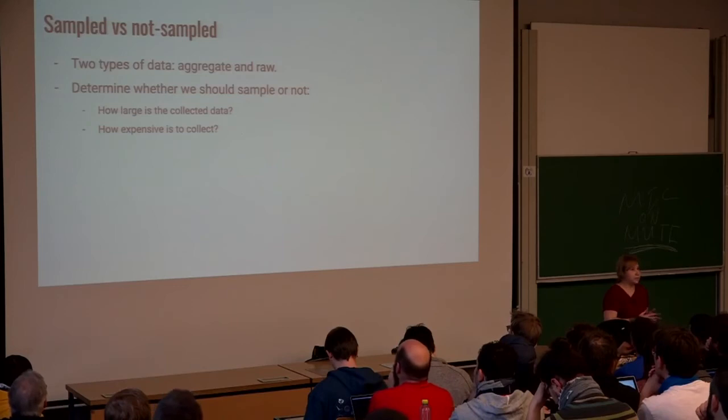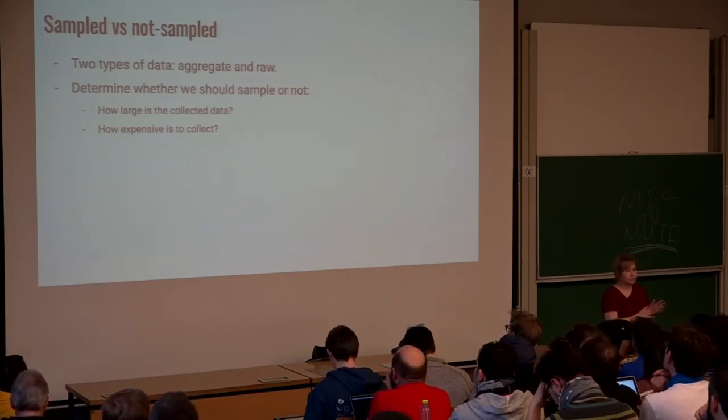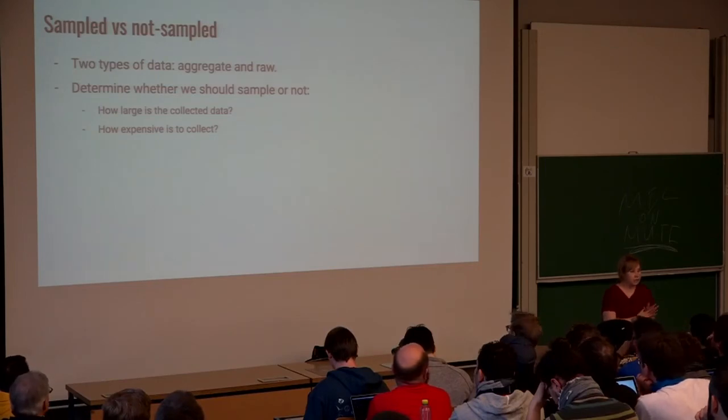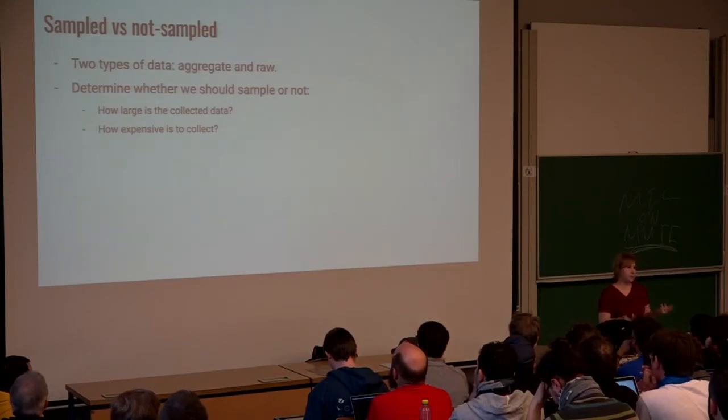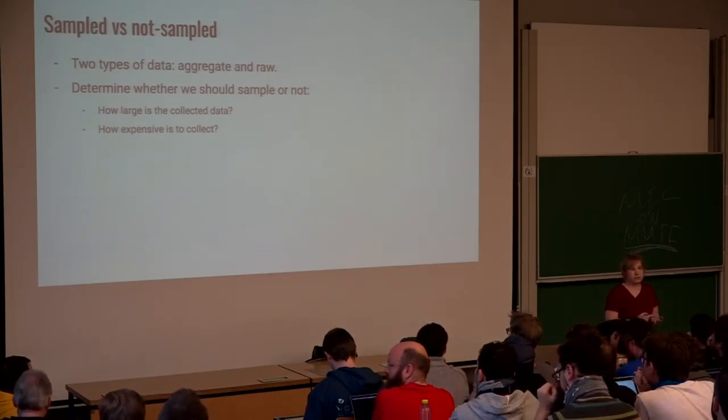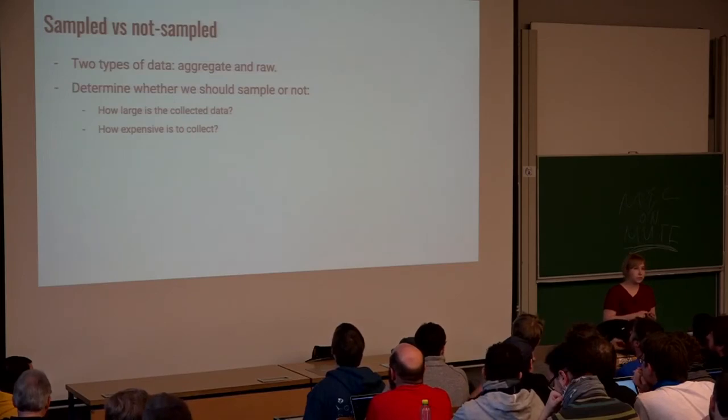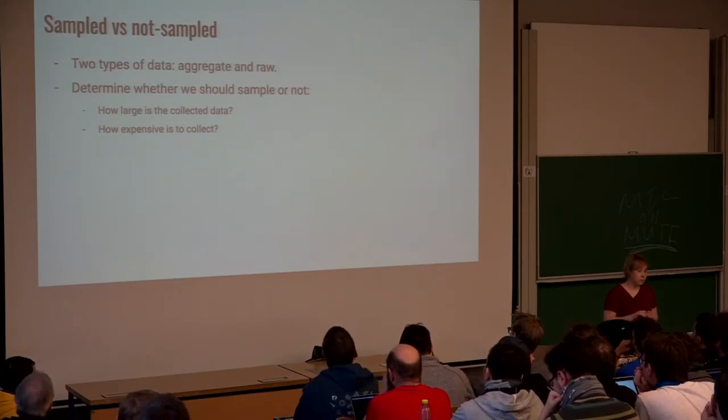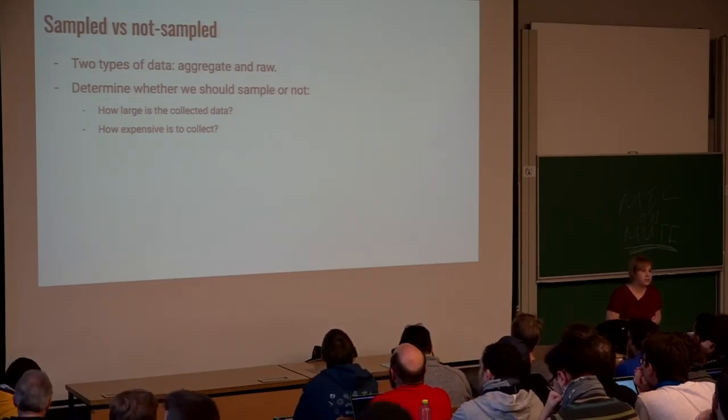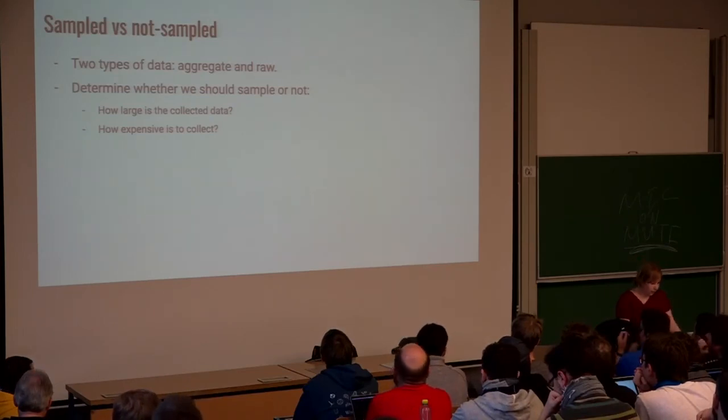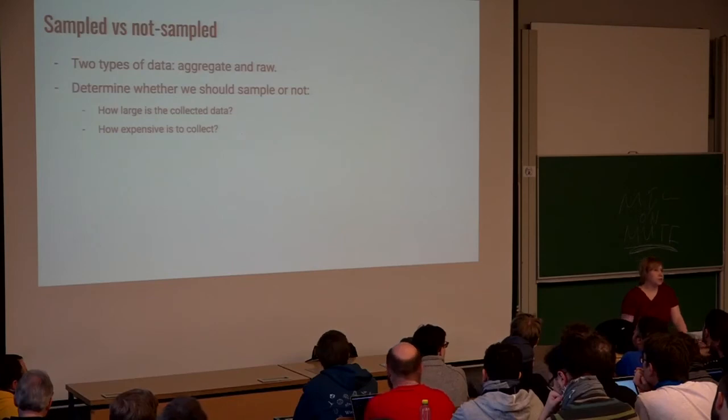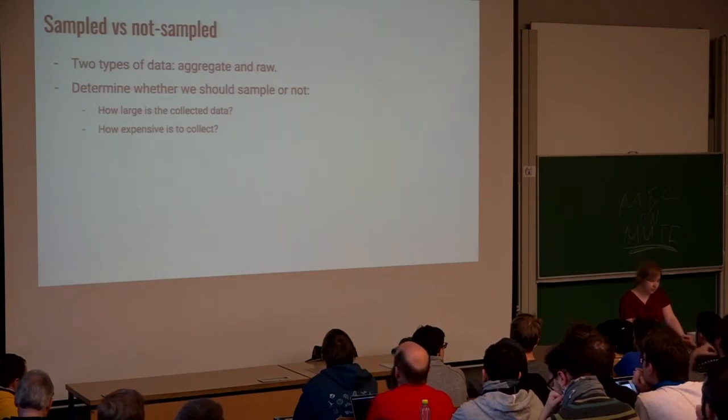We sample expensive and large data. Everything that is cheap to collect and aggregatable usually doesn't have to be sampled. Examples of sampled signals are traces because they are very big and profiles because they are very expensive. On the other hand, we aggregate data in efficient ways to produce cheap and small data to avoid sampling. And this is, for example, what we do for metric collection. We never have to sample our metrics. It's great you don't have to sample the metrics because this is how you see all the 99.99 percentile stats.